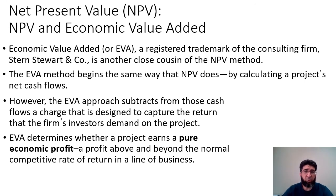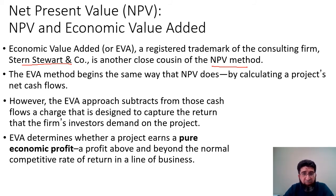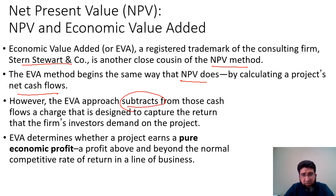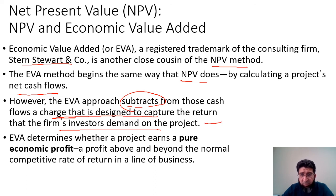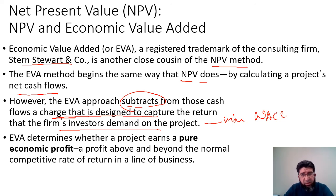Now let's look at another model: Economic Value Added (EVA). It is a registered trademark of the consulting firm Stern, Stewart & Co., and is a very close cousin of the NPV method. The EVA method begins the same way as NPV by calculating the project's net cash flows. However, the EVA approach subtracts a charge designed to capture the return that the firm's investors demand on the project — the minimum required return. EVA determines whether the project earns a pure economic profit — a profit above and beyond the normal competitive rate of return.